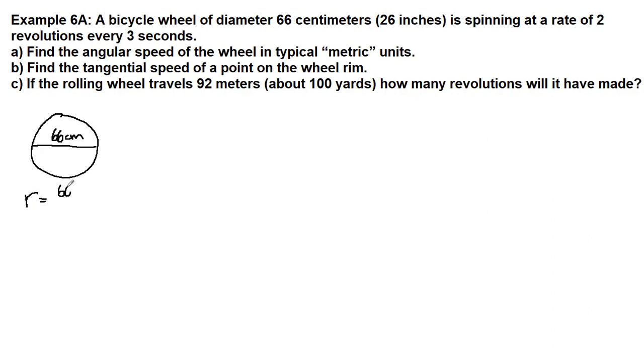The radius would be half of this, so it would be 33 centimeters. And we know that our length unit default should be meters, so we can do that now. And so we'll get 0.33 meters for the radius of this bicycle wheel.